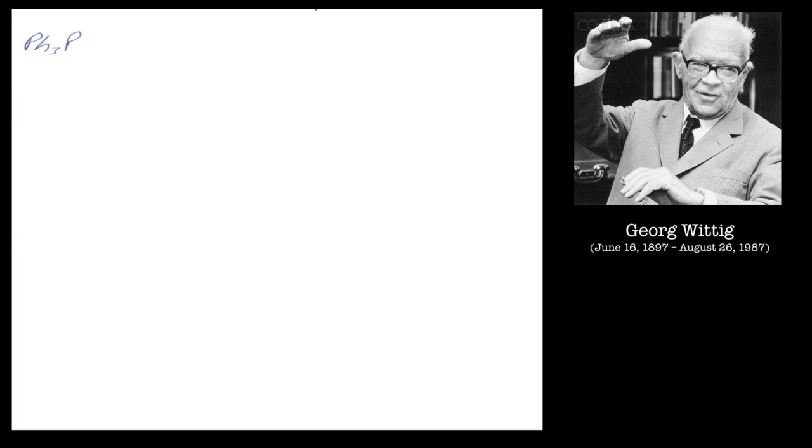Right, so triphenylphosphine reacts with an alkyl halide, R1 or R2. I'll try and keep the numbers the same. I'm going to write this proton on because in the step after this I'm going to deprotonate that, so I'll leave it on there. So there's your alkyl halide. So X is a halide, X equals halide. The lone pair of electrons on triphenylphosphine...